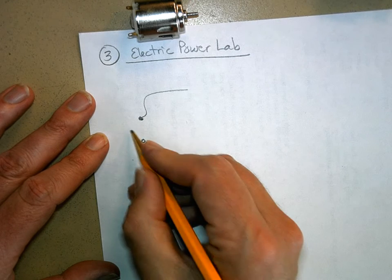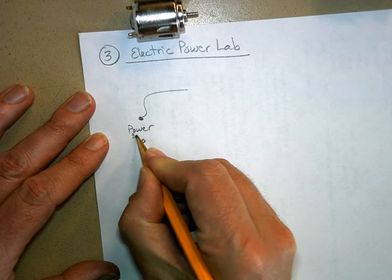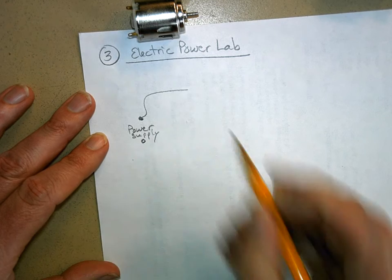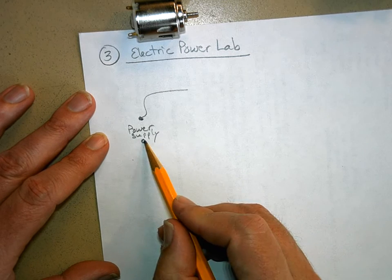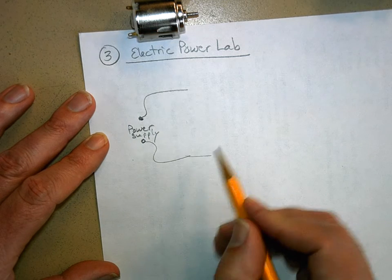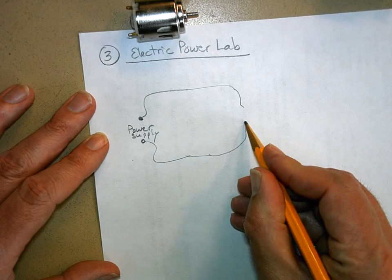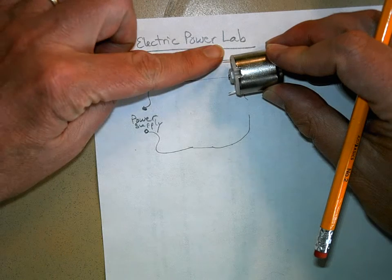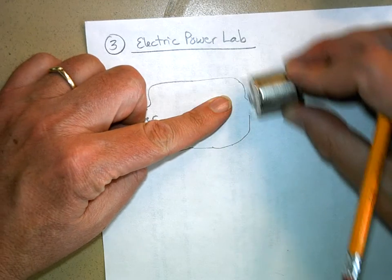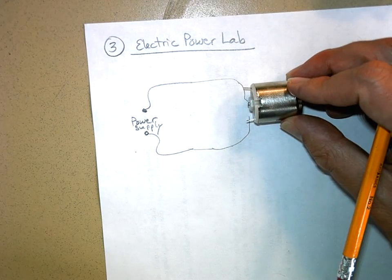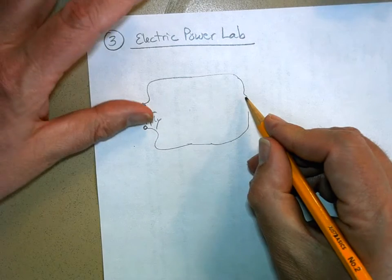This will be at a certain voltage, so this will be the power supply. There's probably a symbol for power supply but I don't know what it is. Then what you're going to do is somehow attach this to the motor. So here's our motor, you have one lead coming here and one lead coming here attached to the wires.